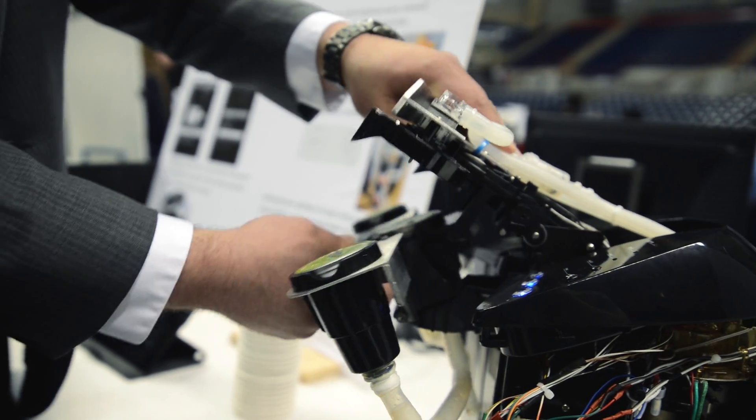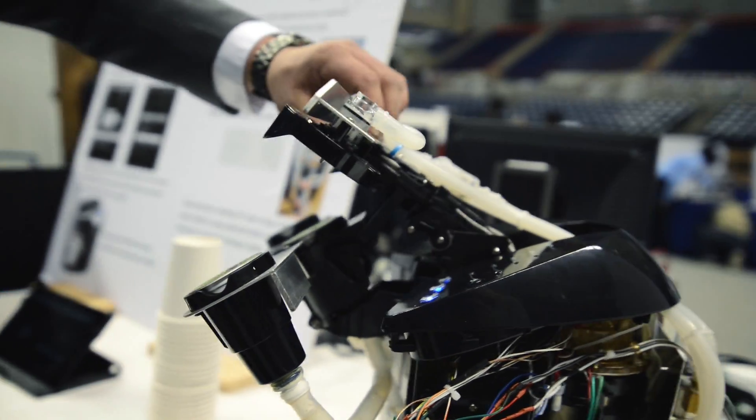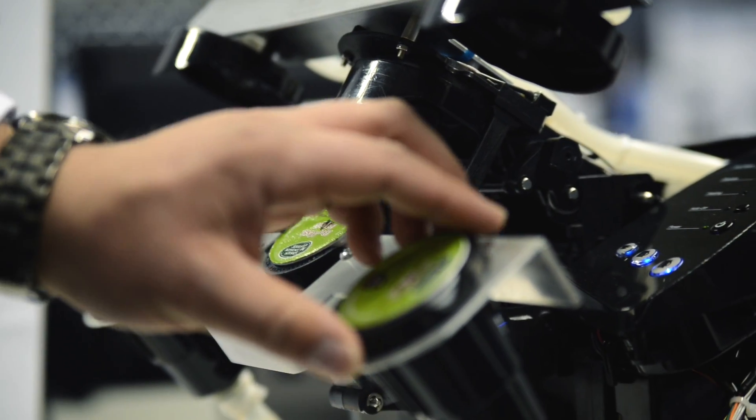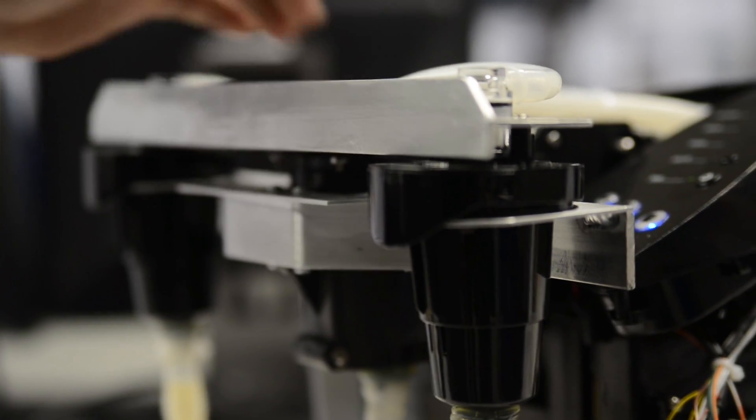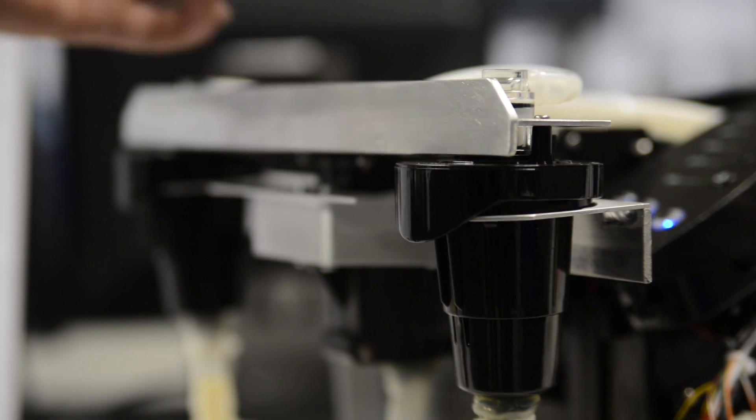We created this lower beam and this upper beam to hold the brew head and the K-cup holders. These aluminum components have all been designed and fabricated here at UConn.